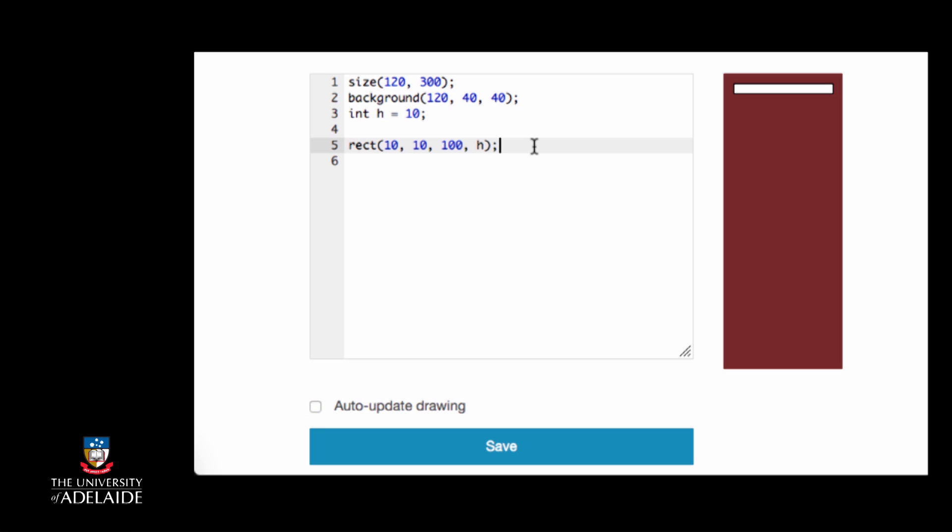This is exactly the same result as if we had written this, and says that the rectangle should be 10 pixels high. So what is the difference? What is the purpose of using variables, where we could just simply enter the values?